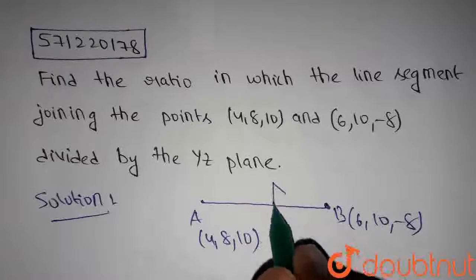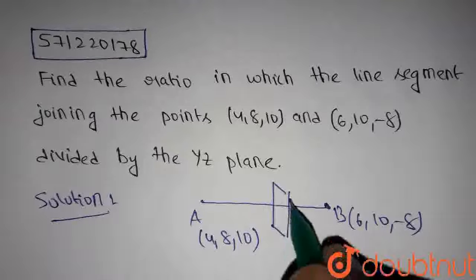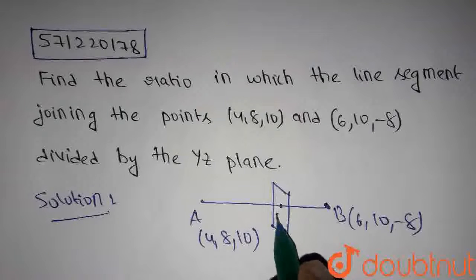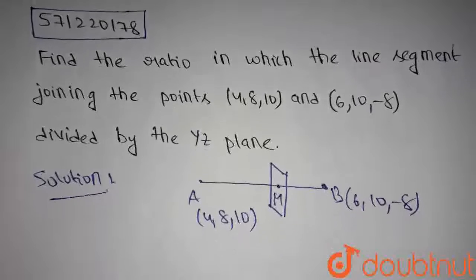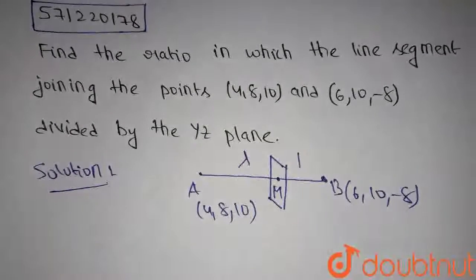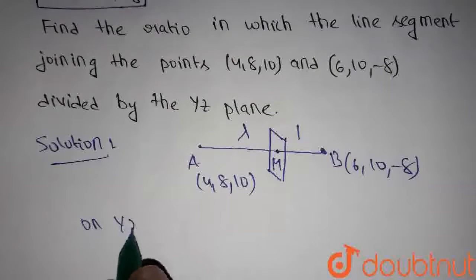Let's say this is the yz plane. And the yz plane meets this line segment AB at point M. And the yz plane divides the line segment AB in the ratio lambda is to 1. On yz plane,